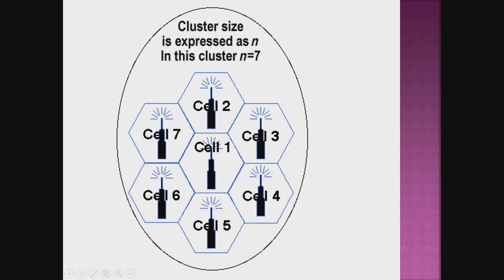What is meant by a cluster? A cluster is a group of cells. A cluster contains a number of cells with unique frequencies. The frequencies are not repeated within a cluster. Such clusters are repeated so that there will not be any interference of frequency, and the frequency can be reused. As frequency can be reused, the electromagnetic spectrum is efficiently used in a cellular communication system.